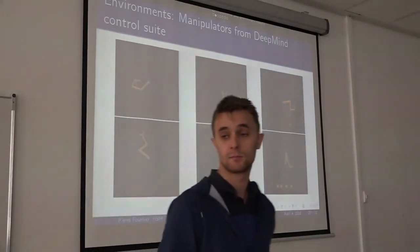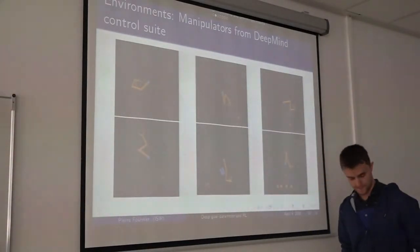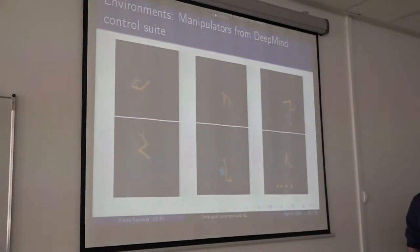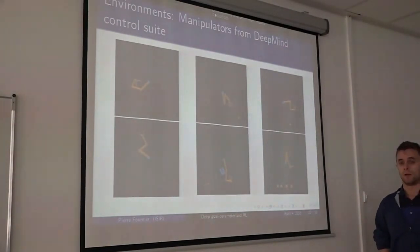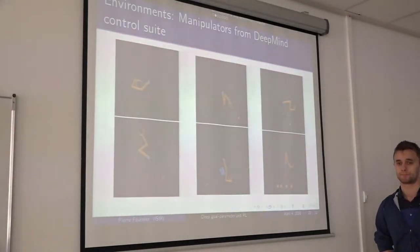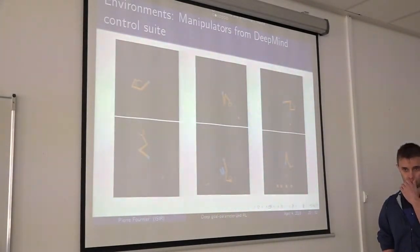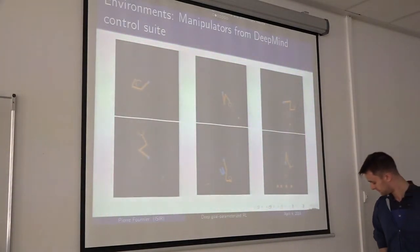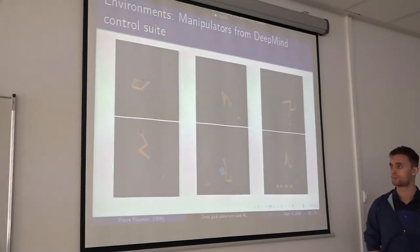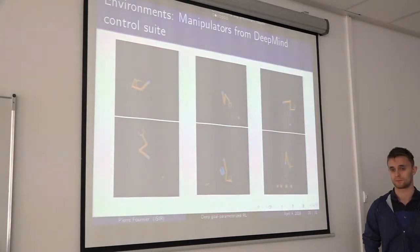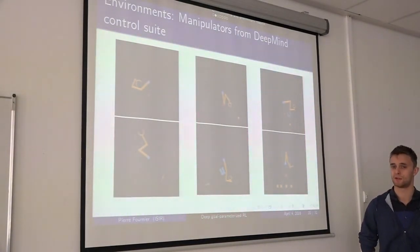Coming back to the benchmark: the HER paper showed that dense rewards give worse results than sparse rewards with HER, and they don't give a satisfactory explanation. Additionally, their action space is directly the end-effector position — which makes the sparse vs. dense reward finding even stranger. It's a very curious result.